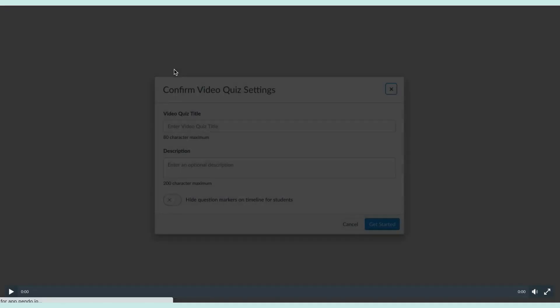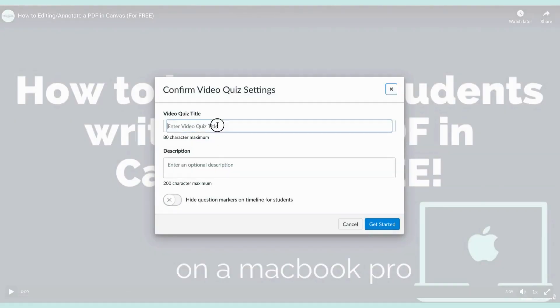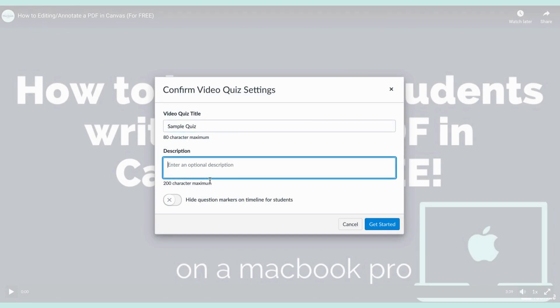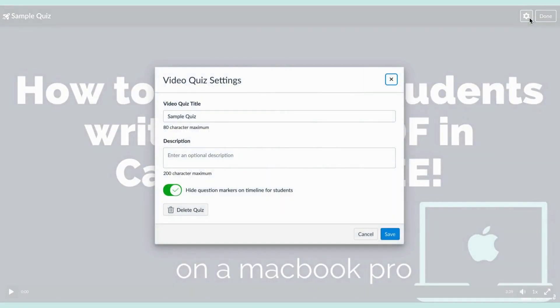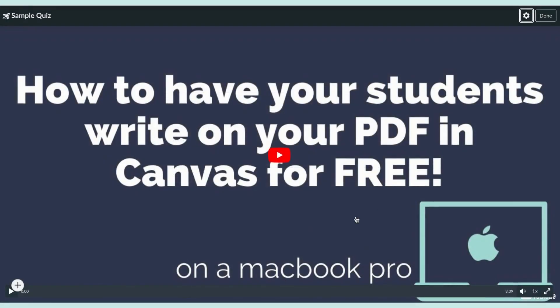Once you've done this, you're going to click the three dots and select 'Create a Quiz.' This is my sample quiz — maybe you want to call it your honors English quiz or your regular English quiz. I'm going to hide my question marks and get started. Once it's started, I'm going to add in questions.